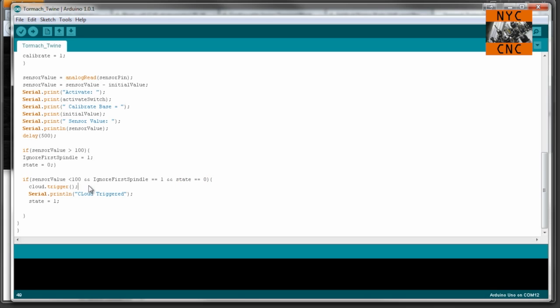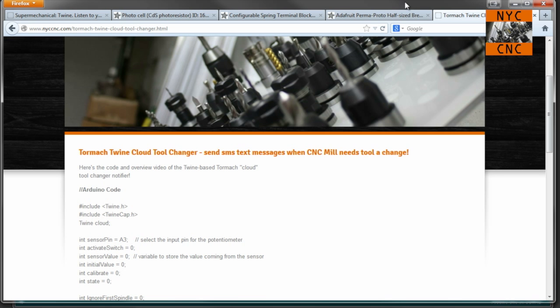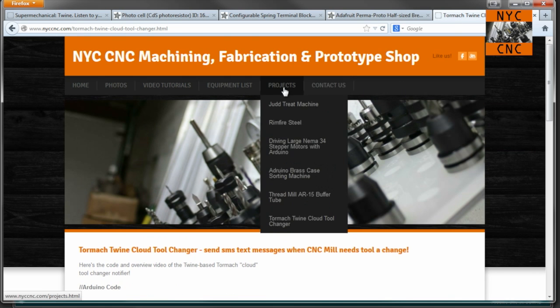So you say state equals one, which means this if statement will not be satisfied again until you get back to here, which is if the sensor value is greater than 100—the light's back on—then state will go back to equaling zero. I've got this code on the NYC CNC website. If you go to Projects, Tormach Twine Cloud Tool Changer, click on that, scroll down, and there is the Arduino code right there.